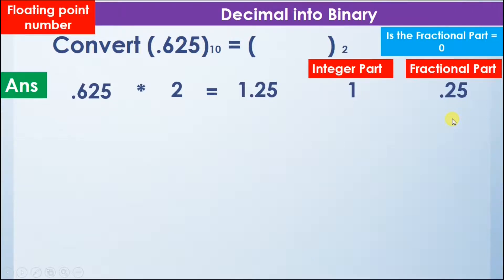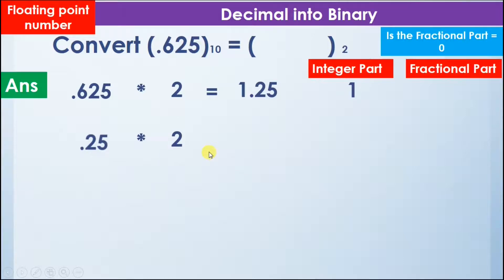Now we will check: is the fractional part equal to 0? If the fractional part is equal to 0, we stop the procedure. Here, the fractional part is not equal to 0, so we take 0.25 and multiply it by 2 again, and we get the answer 0.5.